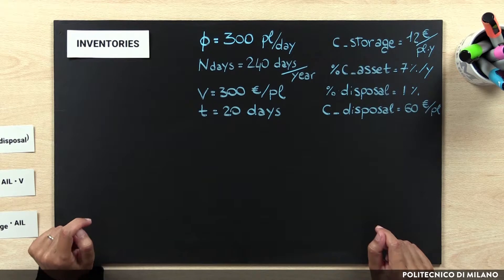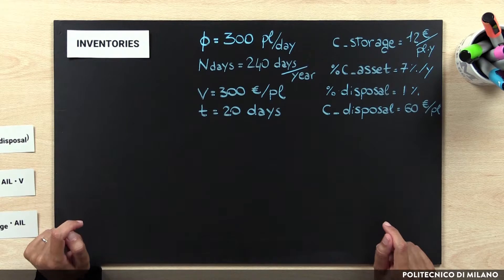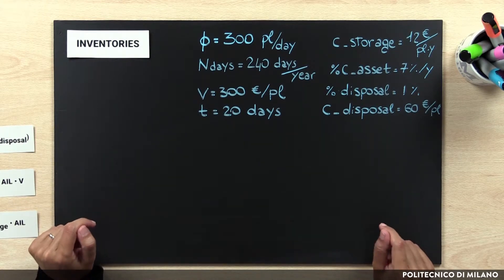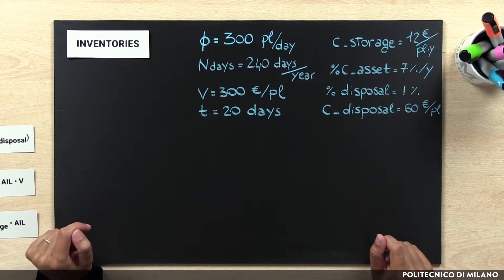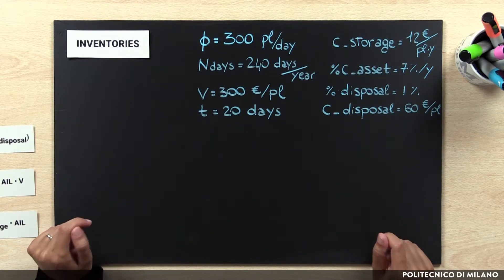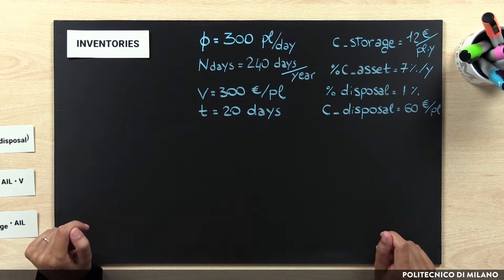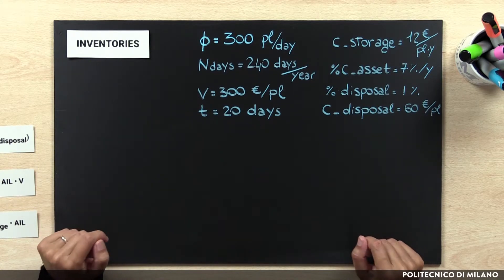The costs related to the physical storage are equal to 12 euros for each pallet load per year, and the percentage asset costs are equal to 7% per year. 1% of the goods should be thrown away as they expire, and we need to spend 60 euros for the disposal of the goods in a pallet load. There are no deposition costs.